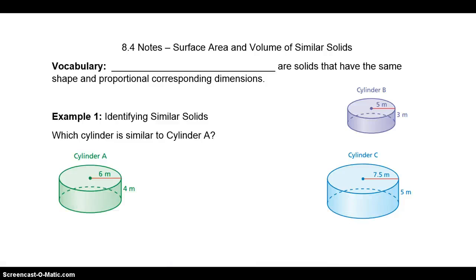Alright, 8.4 is all about surface area and volume of similar solids. Some of this stuff is going to look pretty familiar. We talked about it probably way back in chapter 3 or 4, where we talked about ratios of area and perimeter. Now we're just talking about surface area and volume and the ratio of those two.